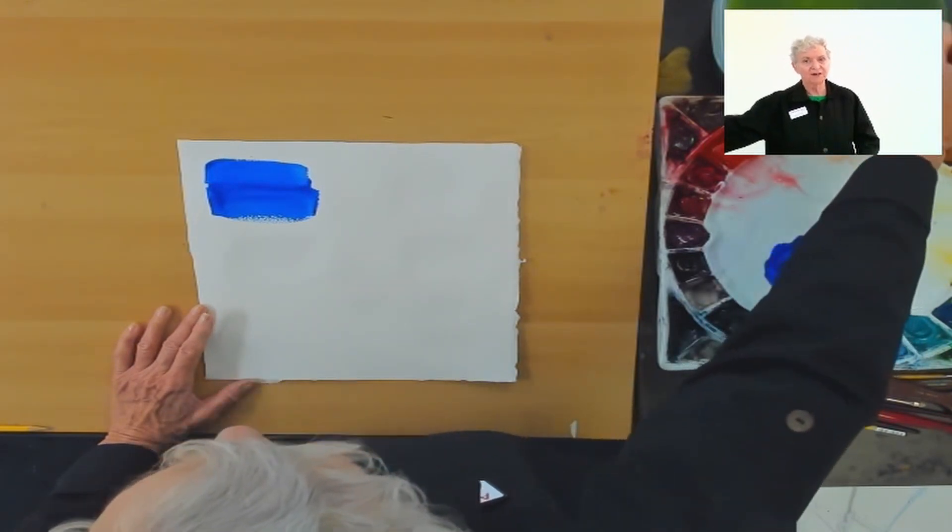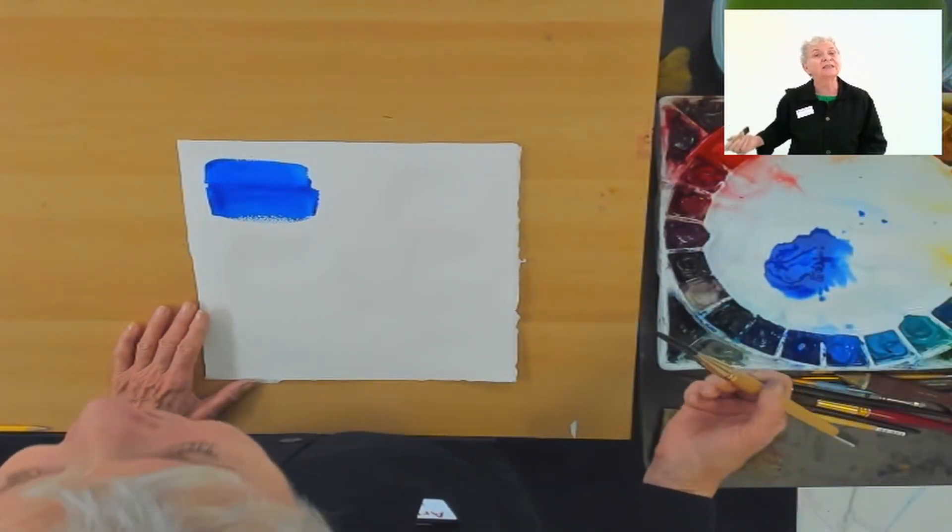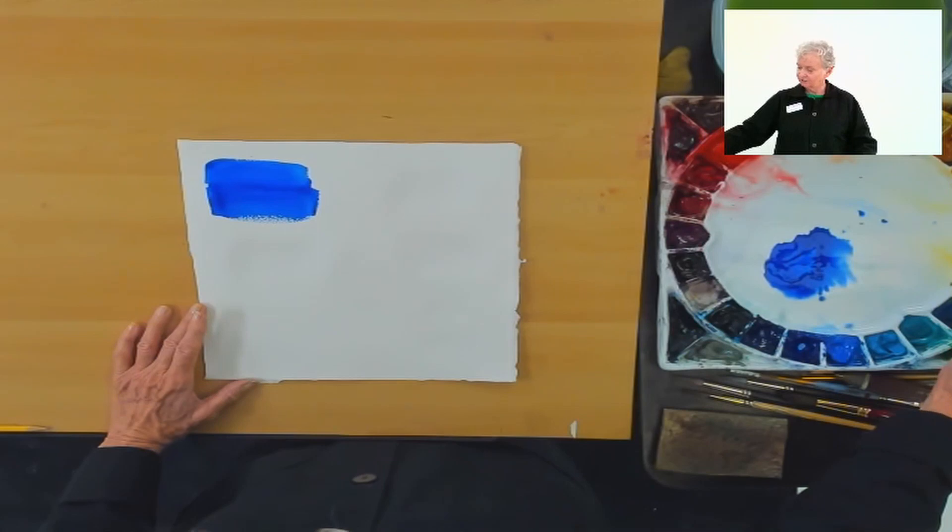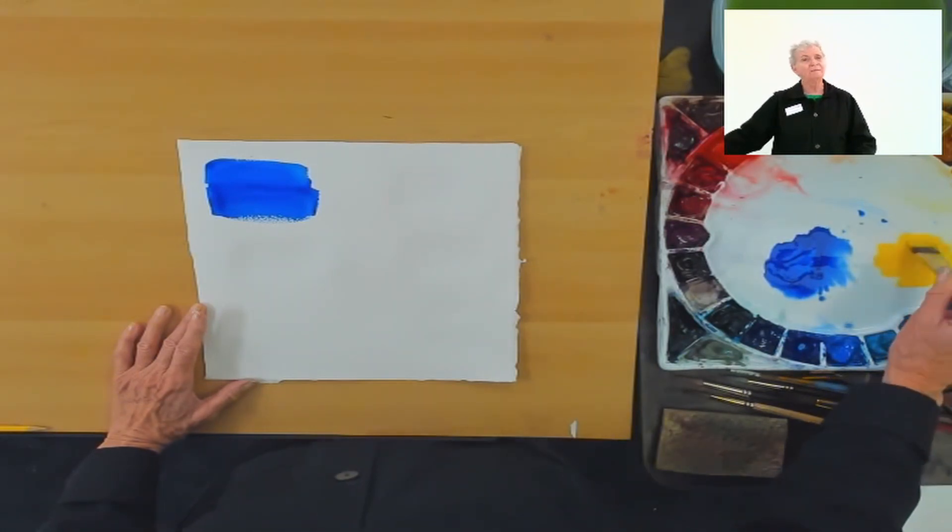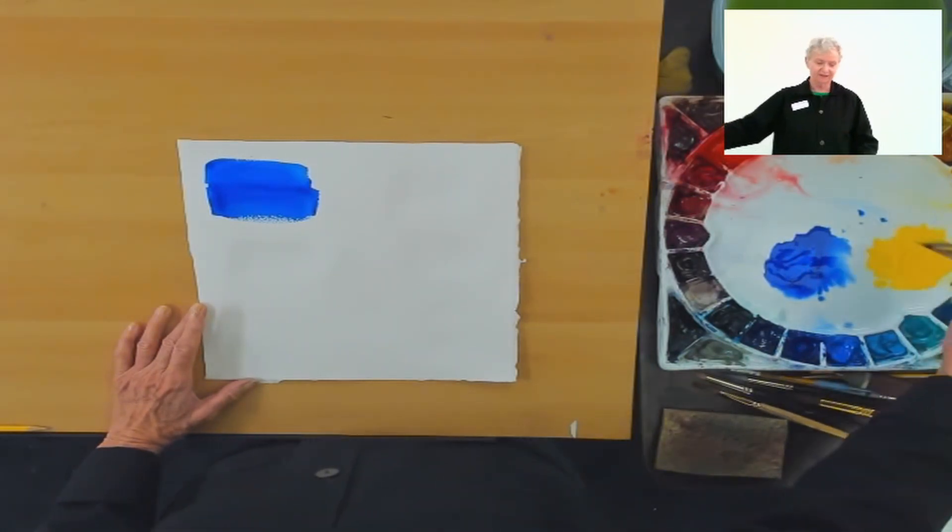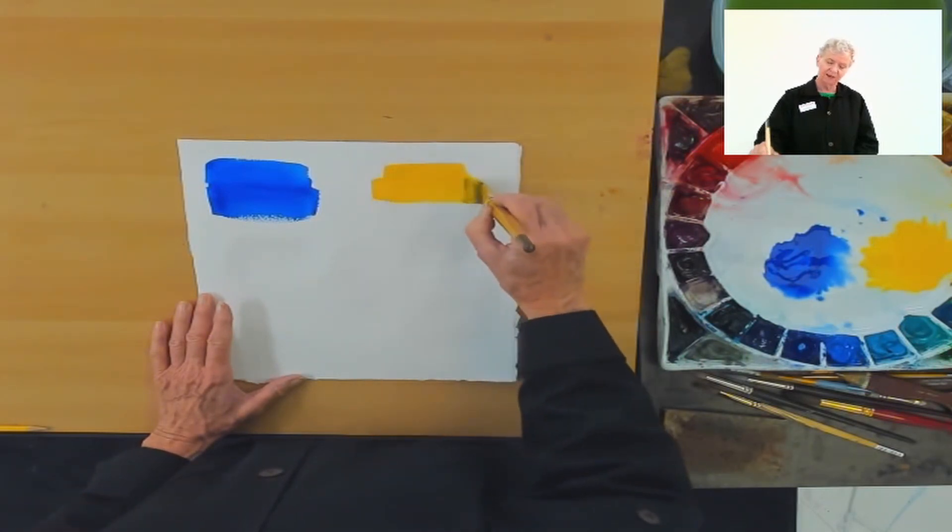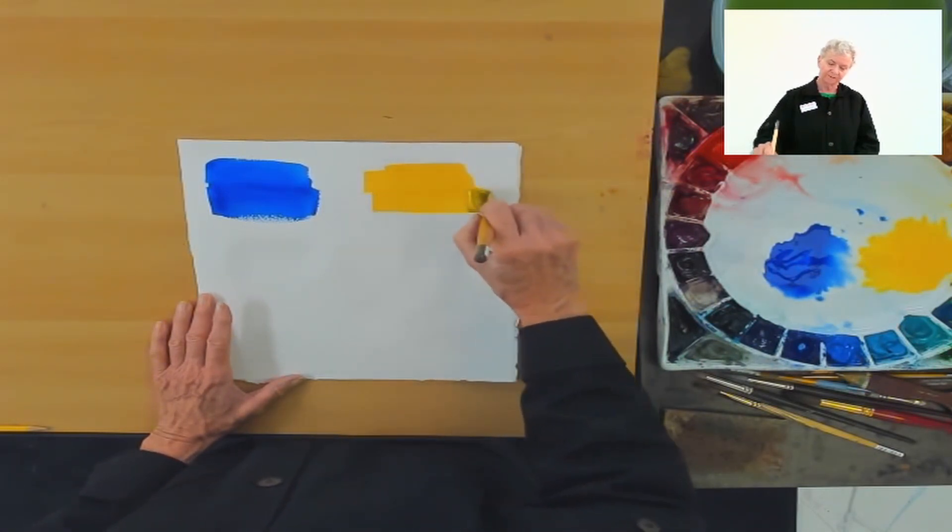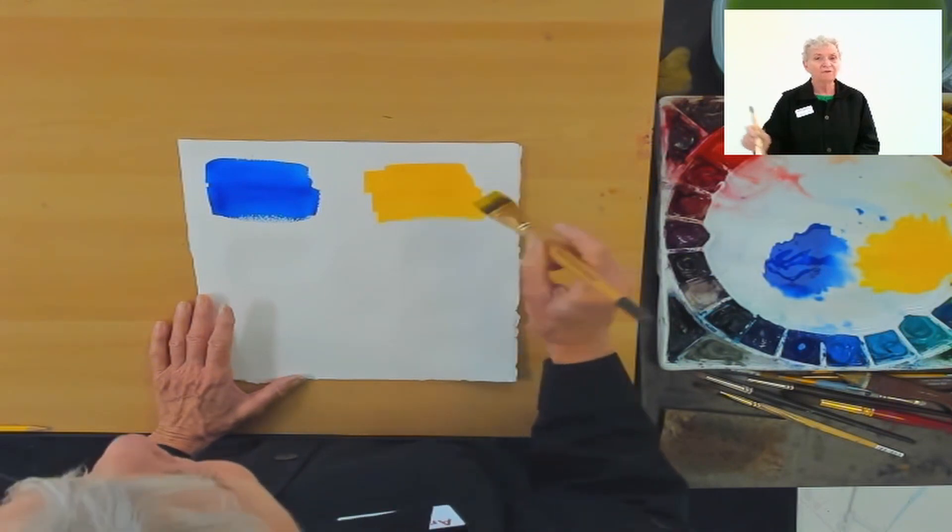And the other color that we're going to use for comparison is cadmium yellow. So here's my cadmium yellow. I mix up a little puddle of it in the mixing area and I'm applying it to the paper. No fresh paint.